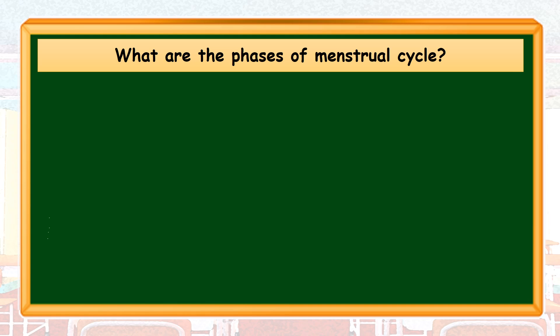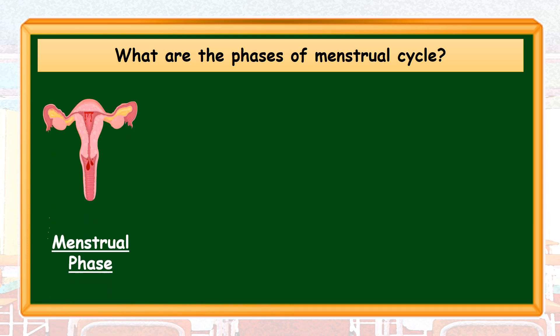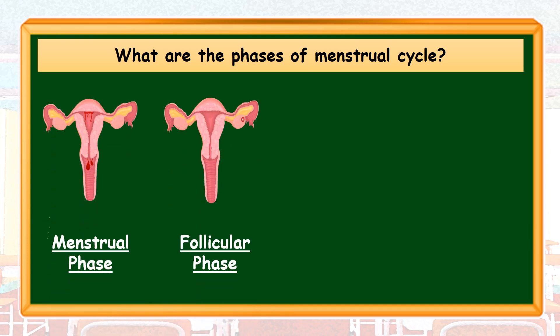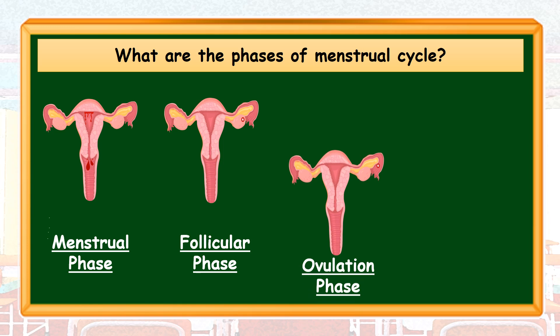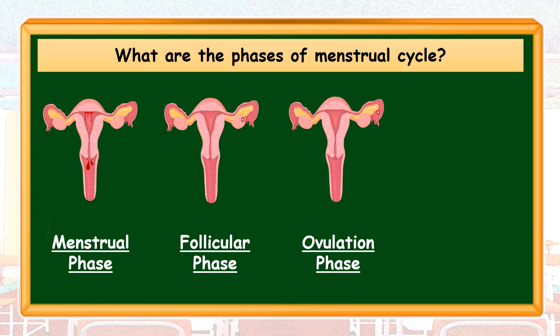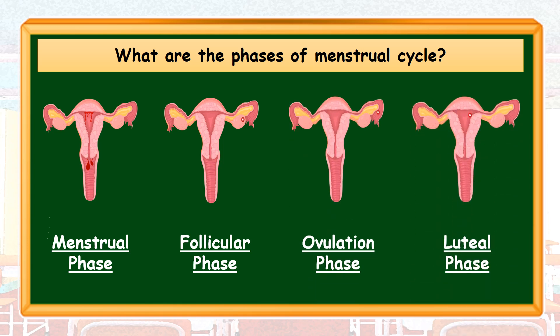What are the phases of the Menstrual Cycle? The four phases of the Menstrual Cycle are: the Menstrual Phase, the Follicular Phase, the Ovulation Phase, and the Luteal Phase.